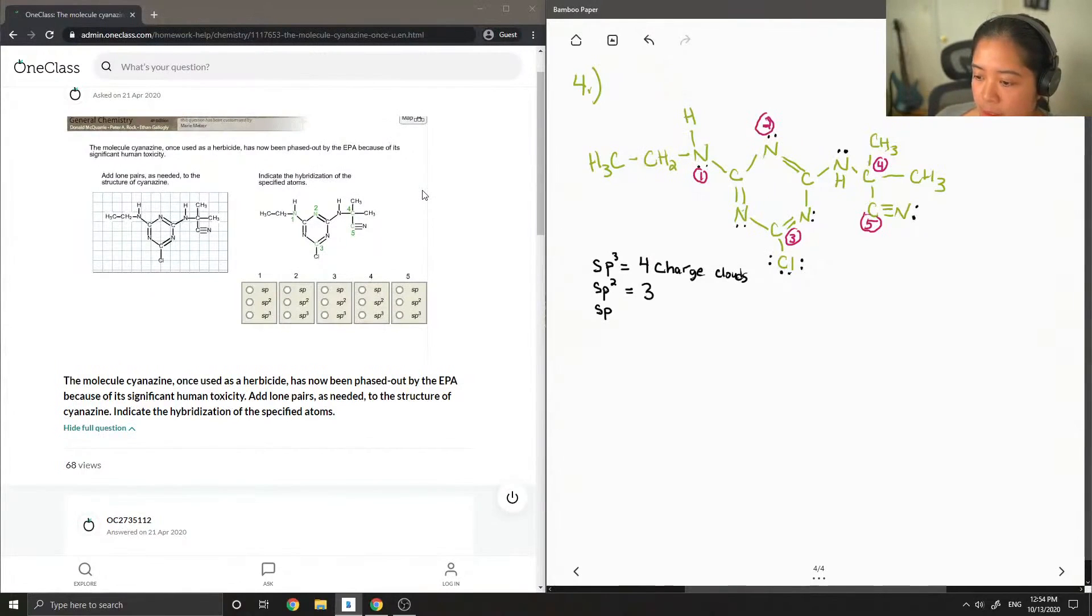SP2, so I'm just going to write down SP2, three charge clouds, and SP is two charge clouds. So I'm just going to say charge clouds can be either a lone pair or an atom.